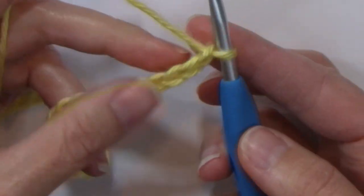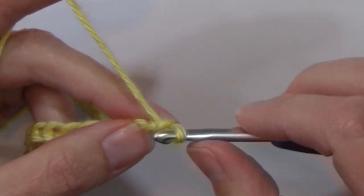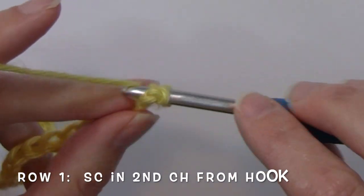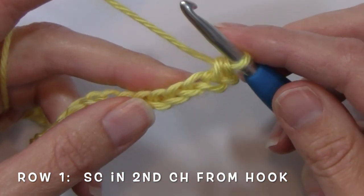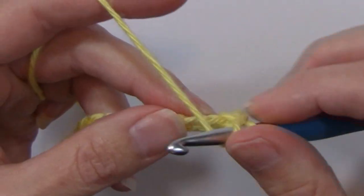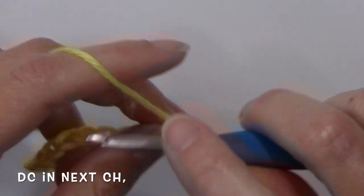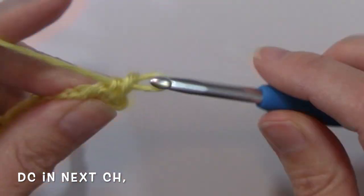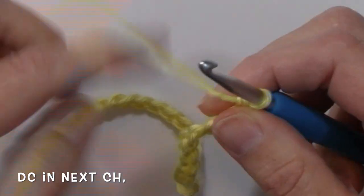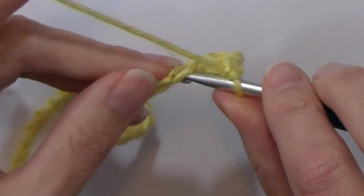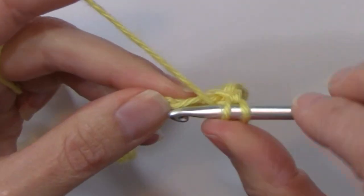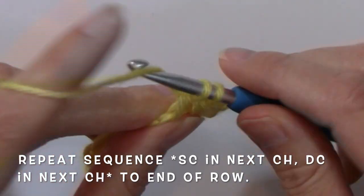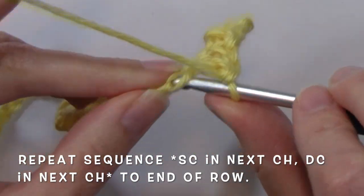So with 31 chains on my hook I'm going to go ahead and single crochet in that second chain from the hook. Then I'm going to work a double crochet in that next chain. And that is the repeat of this stitch. You are working a single crochet in the next chain, double crochet in the next chain.